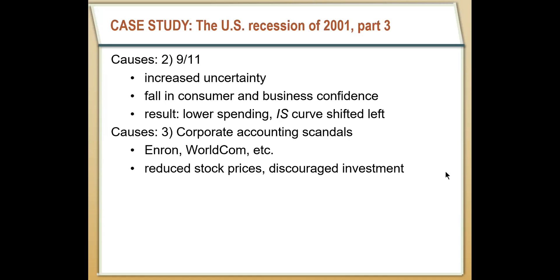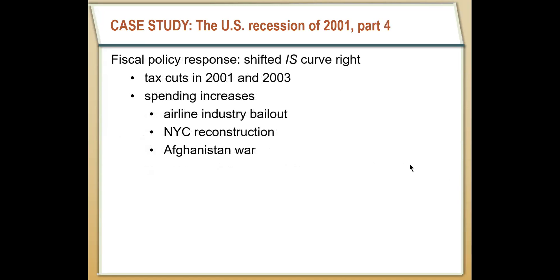In response to this, the government took several policy responses to get the economy out of recession. First, a fiscal policy response: they cut taxes — the Bush administration decreased taxes in 2001 and 2003 — and increased government spending. They bailed out the airline industry, spent a lot on reconstructing New York City, and increased spending on the Afghanistan war. All of that was meant to increase consumer spending and confidence.